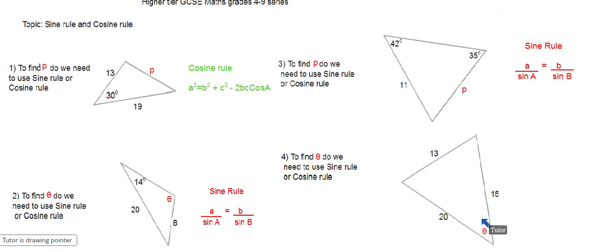Finally, to question number four, to find the angle theta down here, do we need to use the sine rule or the cosine rule? And if you picked the cosine rule, you would be indeed correct.